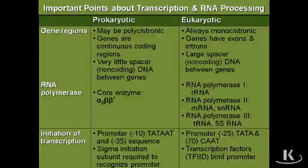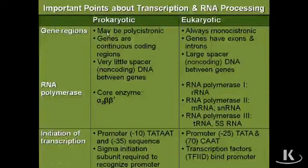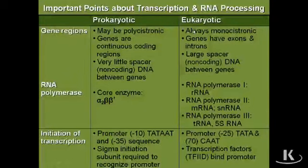We'll look at the process of translation a little bit later, and that will make a lot more sense. To emphasize some important points about transcription and RNA processing in general: between prokaryotes and eukaryotes, gene regions differ. In prokaryotes, they may be polycistronic, whereas in eukaryotes, they're always monocistronic.